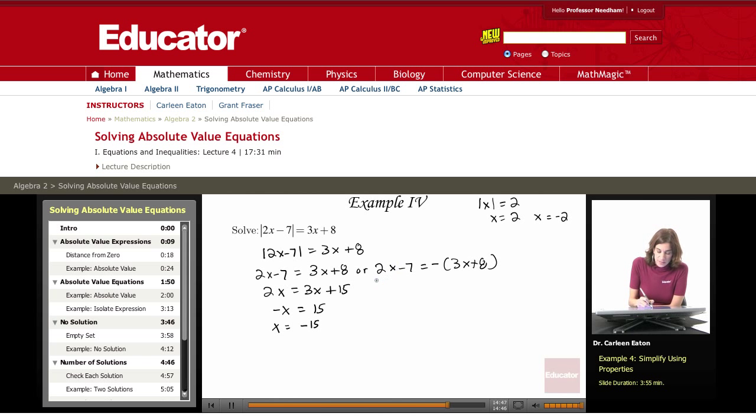Solving this, this is 2x minus 7 equals negative 3x minus 8. Adding 7 to both sides is 2x equals negative 3x minus 1. Adding 3x to both sides, 5x equals negative 1. Divide both sides by 5, x equals negative 1 fifth.